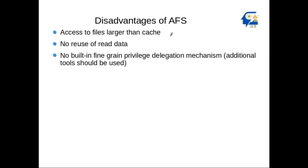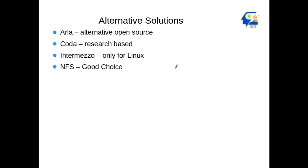Disadvantages include: if files are larger than the size of the cache, it creates a lot of problems — a thrashing situation occurs as the system is constantly busy catching and transferring files. There is also no reuse of read data, and no built-in fine-grained privilege delegation — additional tools are required for that.